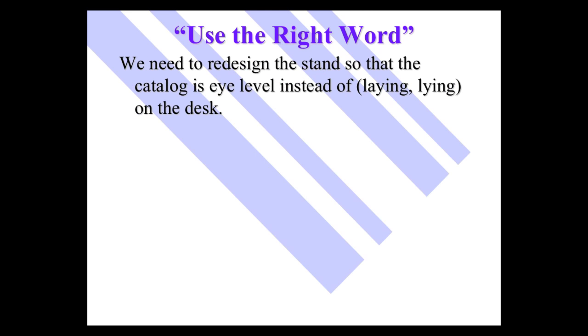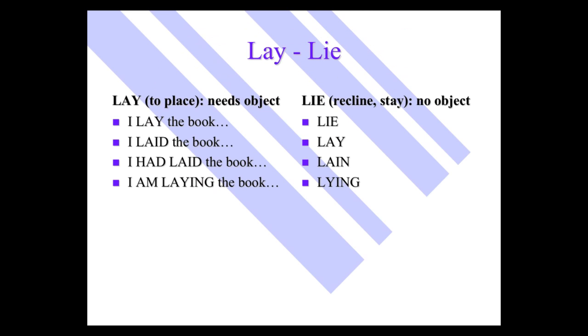Here's a tricky one. We need to redesign the stand so that the catalog is eye level instead of laying or lying on the desk. Well, first off, let's look at the difference between lay and lie. Lay means to place. It needs an object. And when we go into the different tenses, I lay the book, present tense. I laid the book, past tense. I had laid the book. I am laying the book.